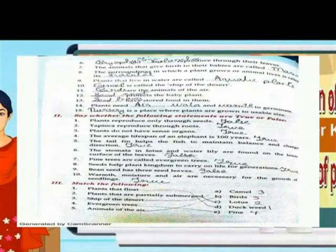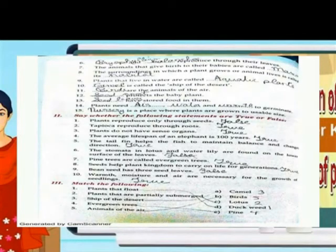Stomata are found on the lower surface of the leaf — True. Neem trees are called evergreen trees — True. Seeds help plants carry on life for generations — True. Bean seed has 2 seed leaves — False.